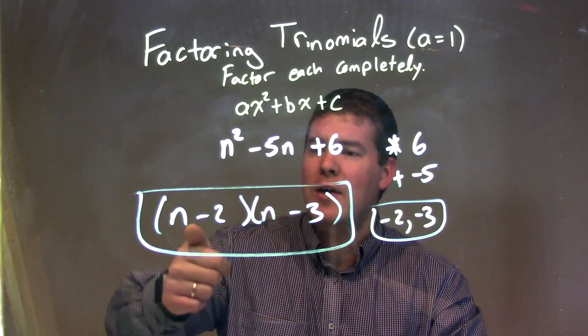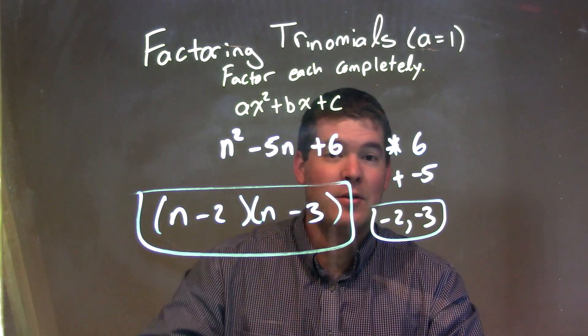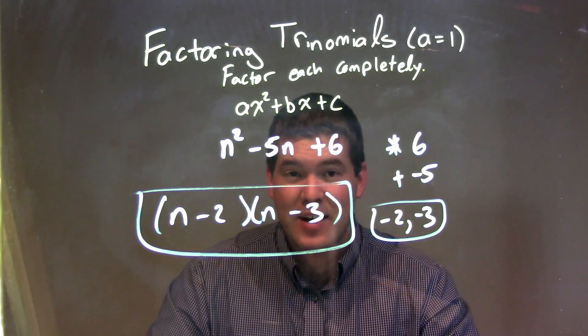So when I write it in my factored form, I have n minus 2 times n minus 3. And that's it. We just plug it in there, and that's our final answer.